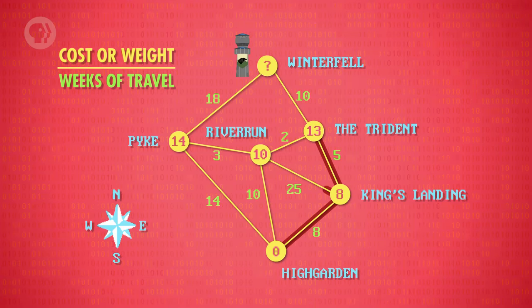Dijkstra's algorithm loops again. The node with the next lowest cost is the Trident, and the only unchecked line from the Trident is a path to Winterfell. It has a cost of 10, plus the cost of 12 it takes to get to the Trident, for a grand total cost of 22. We check the last path from Pike to Winterfell, which sums to 31. Now we know the lowest total cost and the fastest route for the army to get there, which avoids King's Landing.